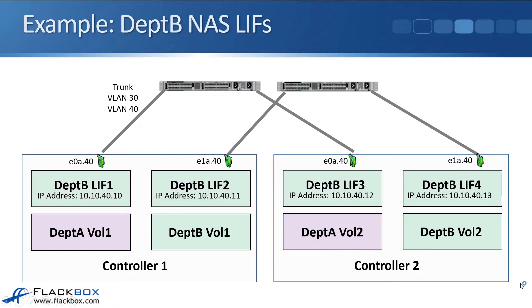We've also got Department B with their volume 1 on node 1 and volume 2 on node 2. For client access to those volumes, we have configured a Department B LIF 1 with IP address 10.10.40.10, then 40.11, 40.12, and 40.13, spread over the physical ports on VLAN 40 interfaces. So we've got VLAN 30 and VLAN 40 with different IP subnets to keep Department A and Department B traffic separate.